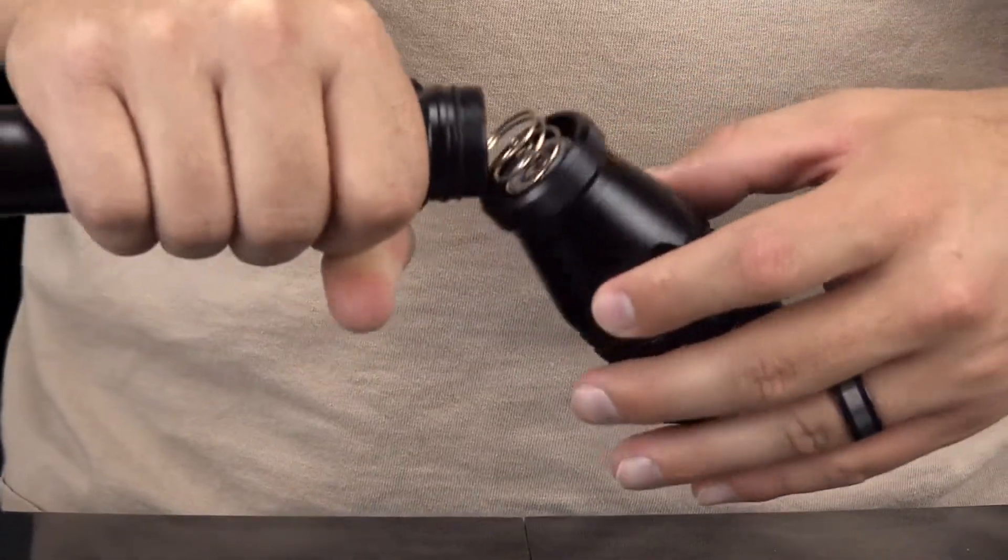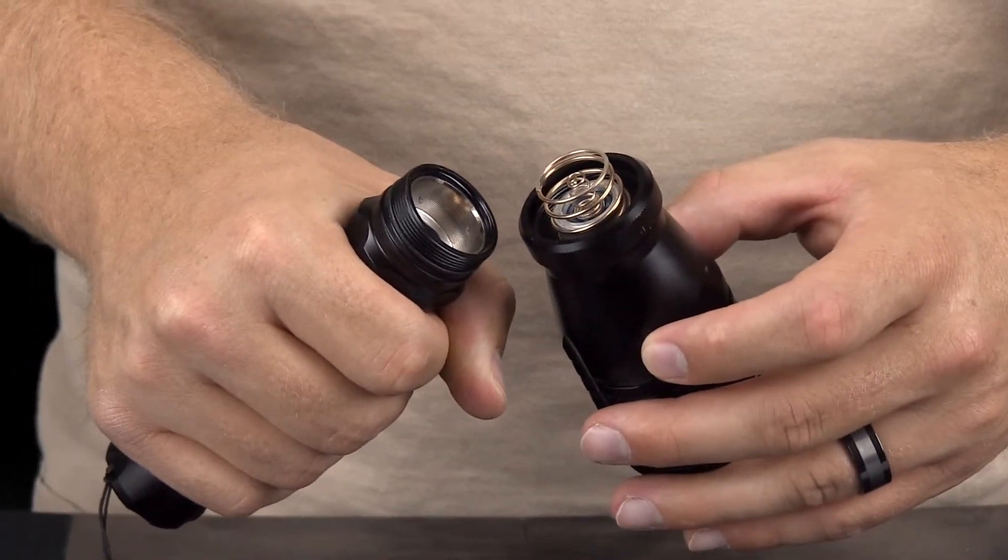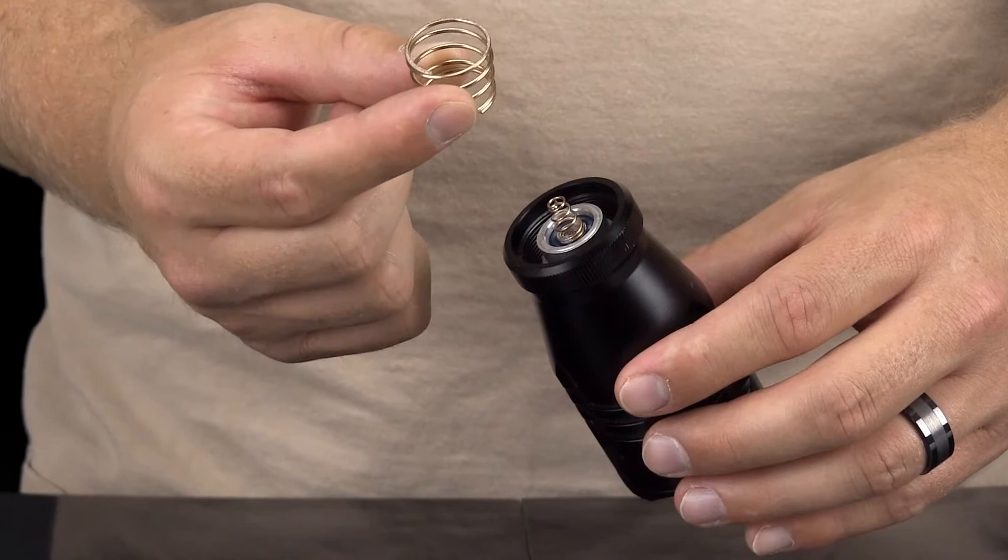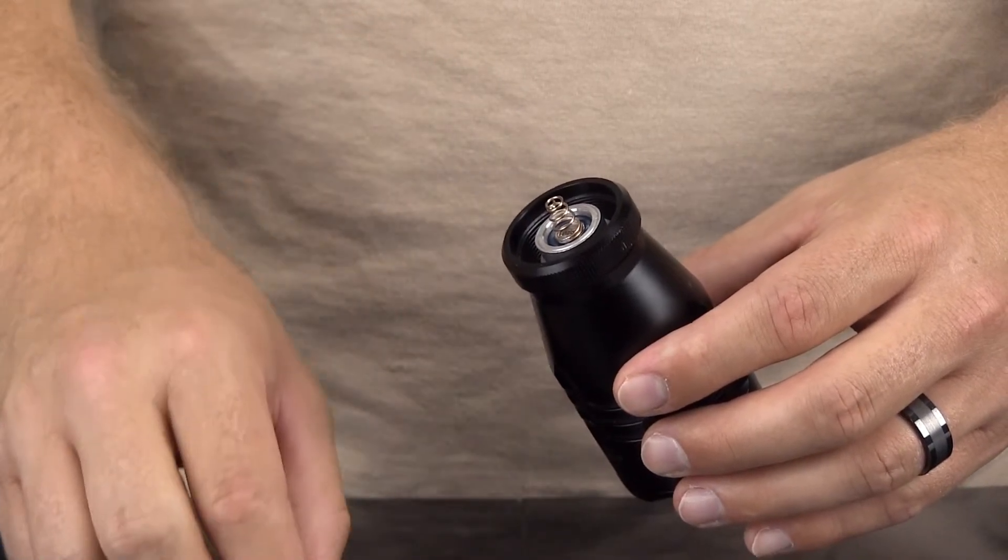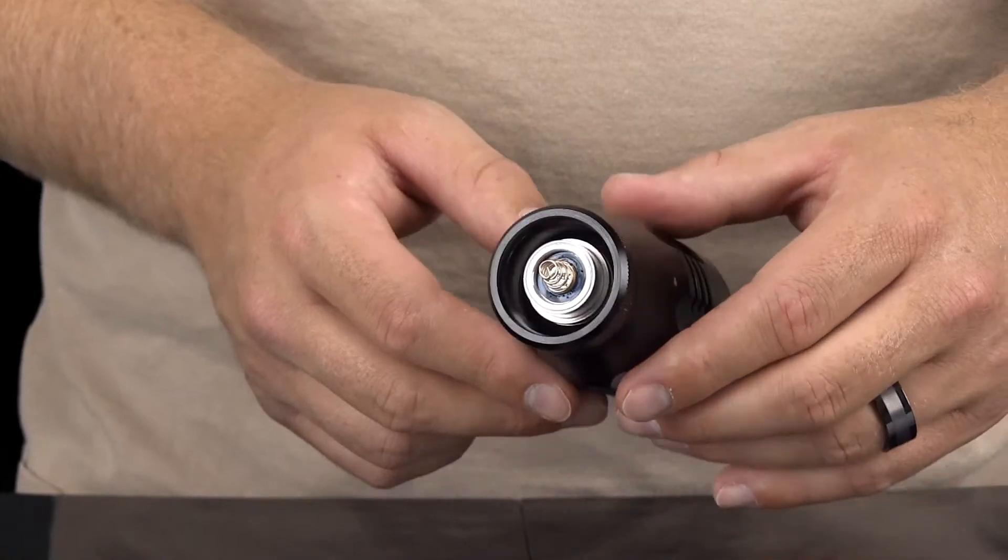Once the bezel is removed from the light housing, you will see a contact spring which should be loosely attached to the LED. Remove the spring from the LED. Be careful not to lose this spring as your light will not function without it.